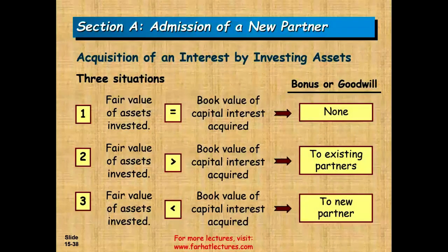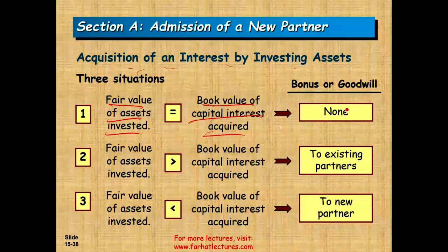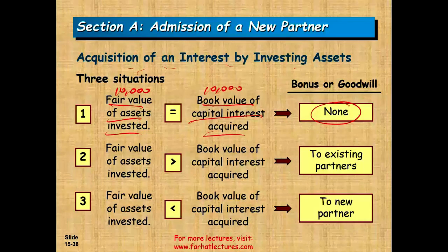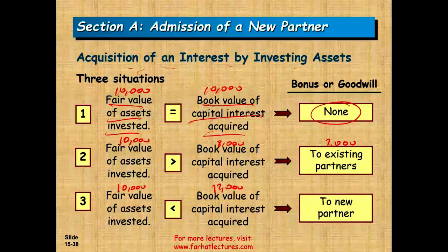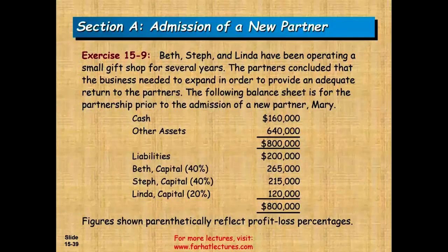To summarize the methods: if the fair value of assets invested equals the book value of capital acquired, there is no goodwill and no bonus. If someone invested $10,000 and received only $8,000 in capital, the $2,000 difference is a bonus to the existing partners, or alternatively, goodwill is recorded. If someone invested $10,000 and received $12,000 in capital, the additional $2,000 is a bonus to the new partner. The best way to understand these is to work through examples.